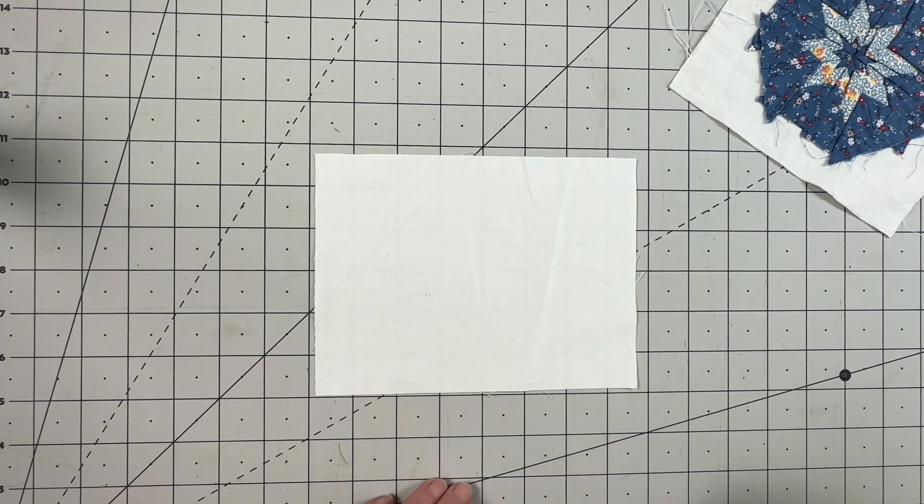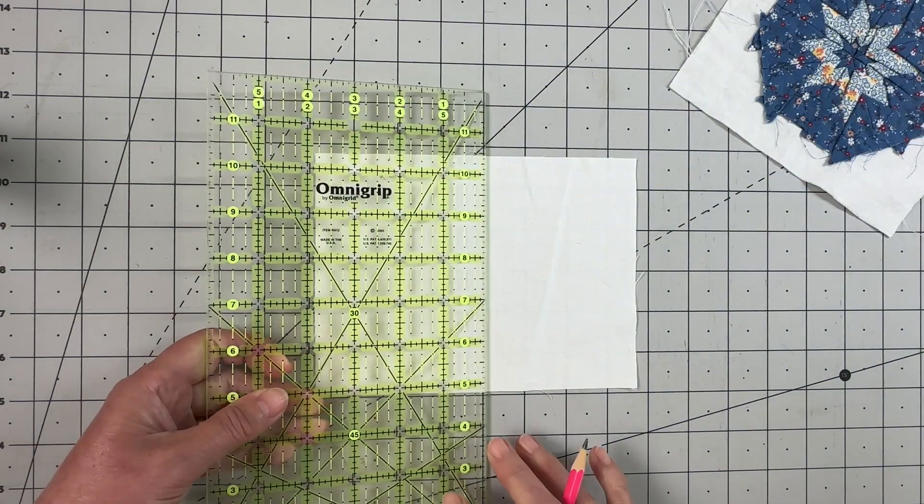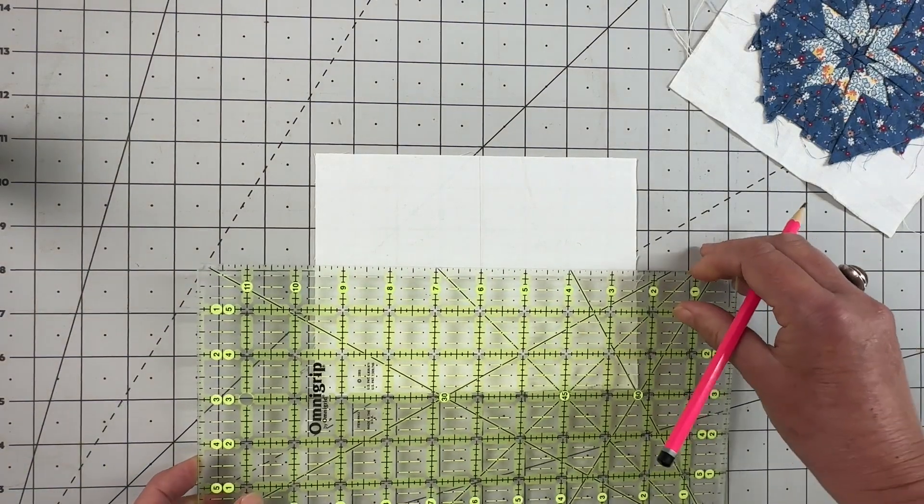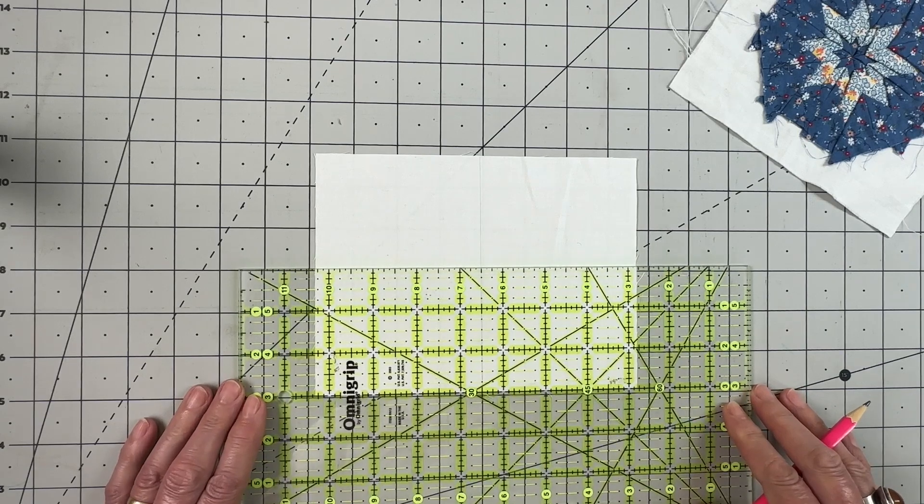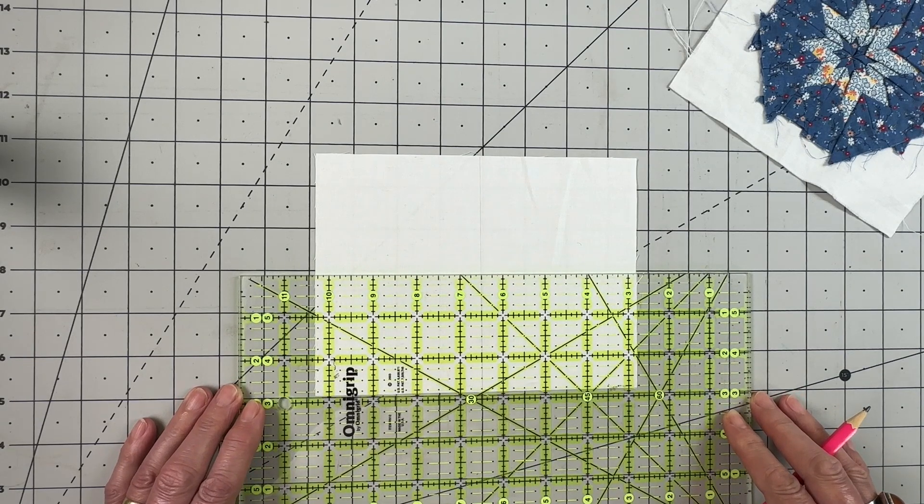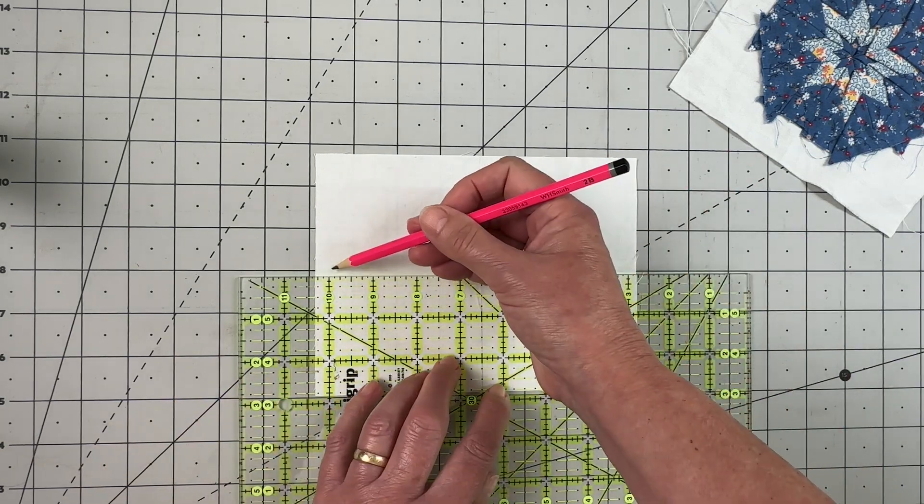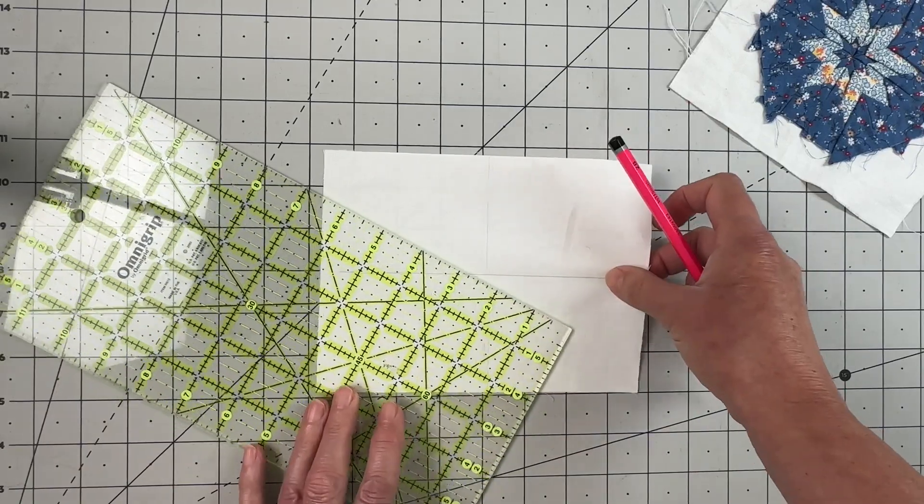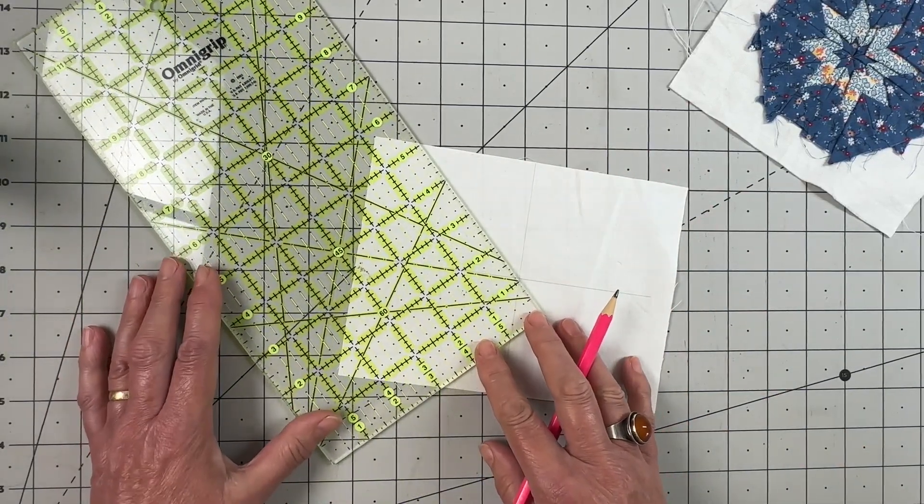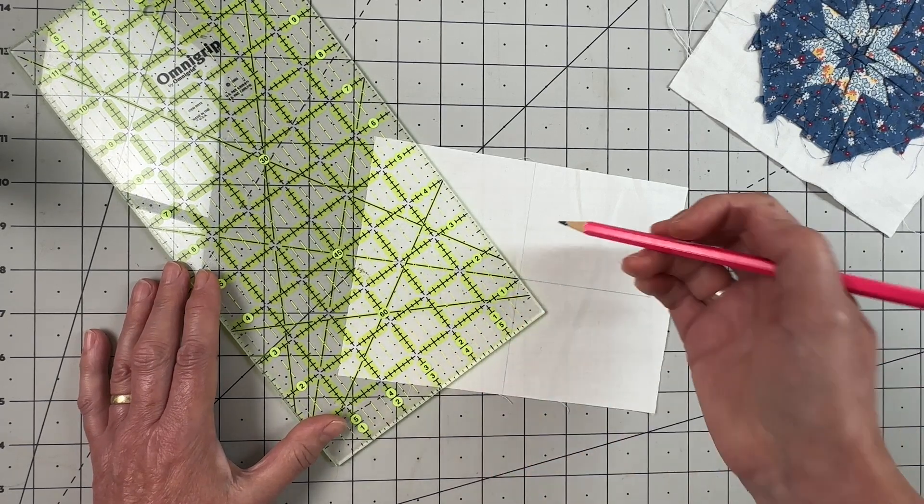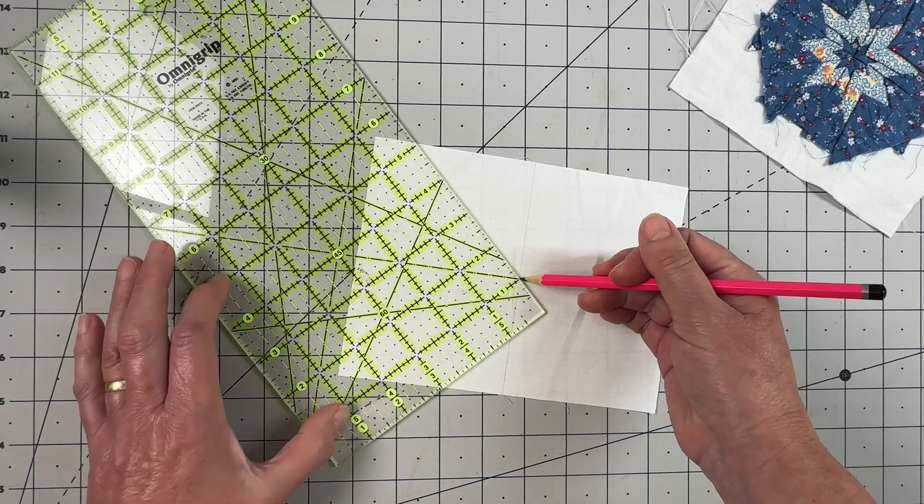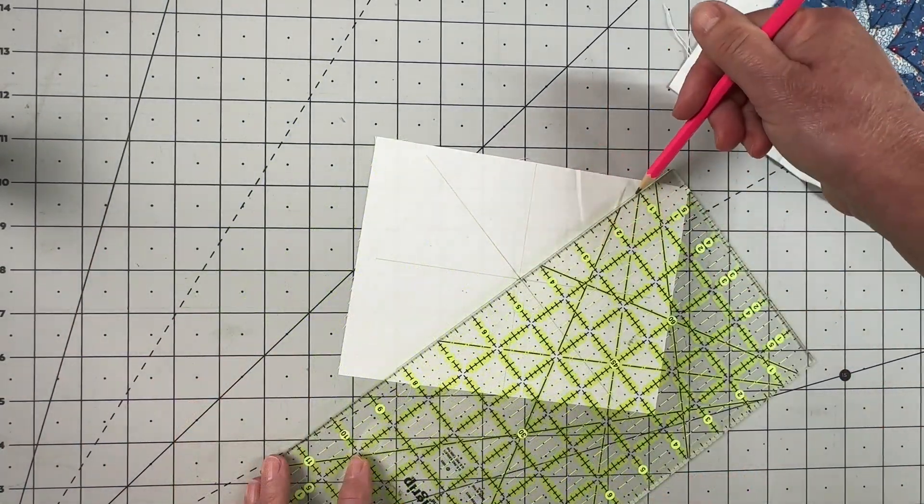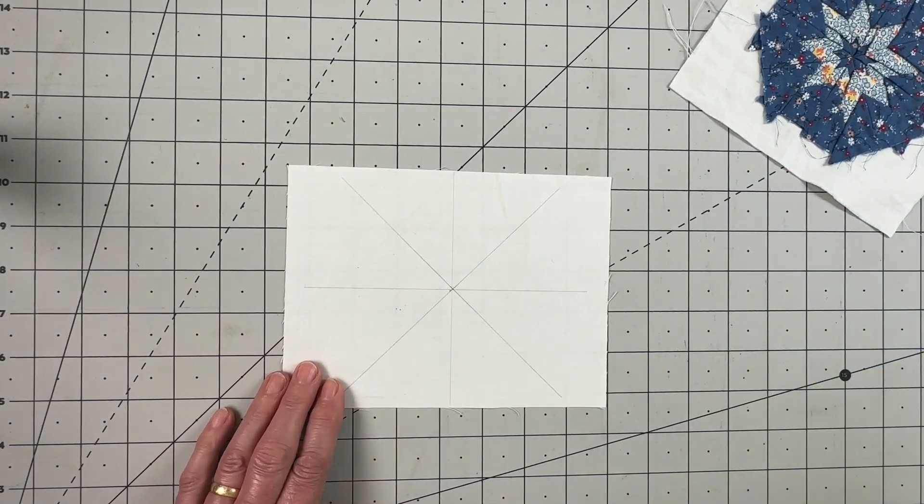To start, you're going to take your background piece of fabric and draw a vertical line - it doesn't have to be exactly in the center - and then using that line, create a horizontal line, again roughly halfway through. Then using your ruler, you're going to place the 45-degree line along one of those lines so that you're going through that center point, and create a grid. That's going to be your starting point.